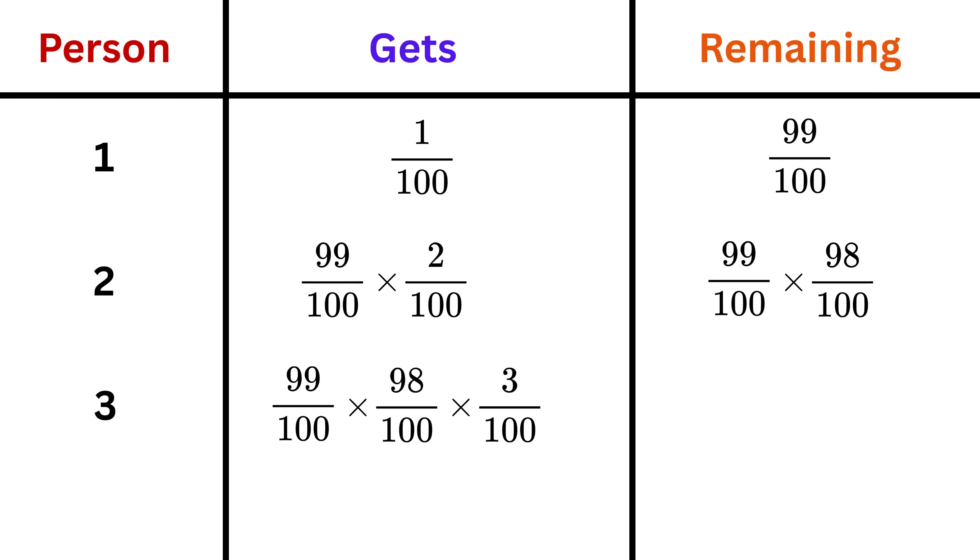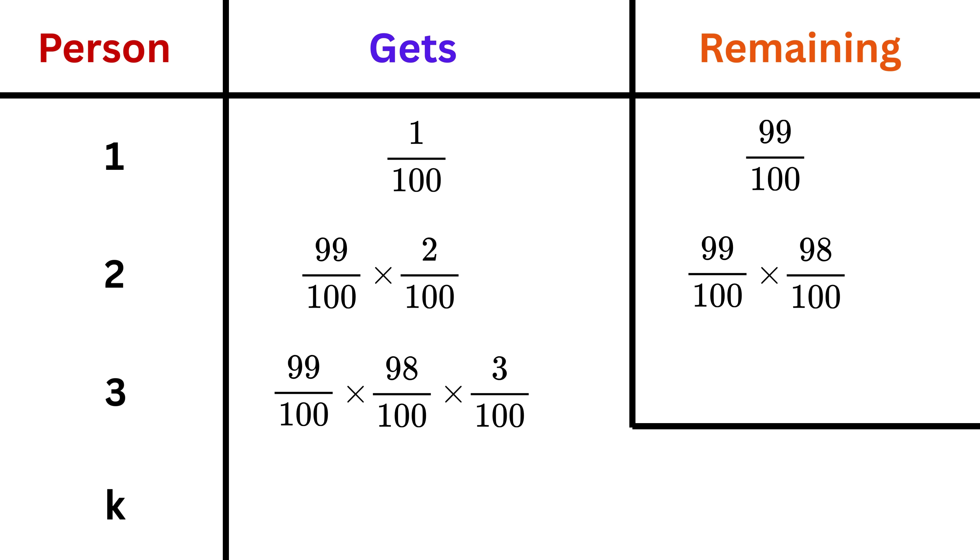That leftover amount will be 98% of 99 over 100, or this multiplied by 98 over 100. Once we have that, the third person takes 3% of this, or 3 over 100 of that leftover pie. By now a clear pattern starts appearing. For any person number k, the portion of pie they receive is the remaining pie after all the earlier people multiplied together, and then multiplied by k percent or k out of 100.